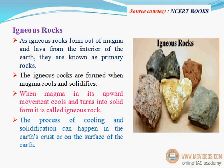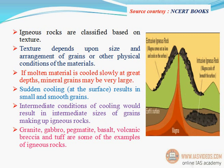Igneous rocks form out of magma and lava from the interior of the earth and are known as primary rocks. They are formed when magma cools and solidifies. When magma in its upward movement cools and turns into solid form, it is called igneous rock. The process of cooling and solidification can happen in the earth's crust or on the surface. Igneous rocks are classified based on texture, which depends upon size and arrangement of grains. If molten material is cooled slowly at great depths, mineral grains may be very large; sudden cooling at the surface results in small and smooth grains; intermediate conditions result in intermediate grain sizes.